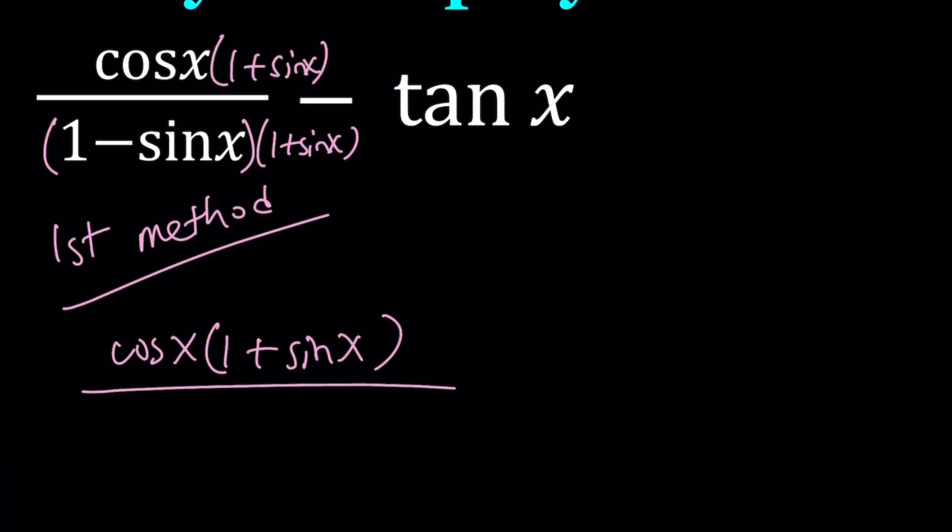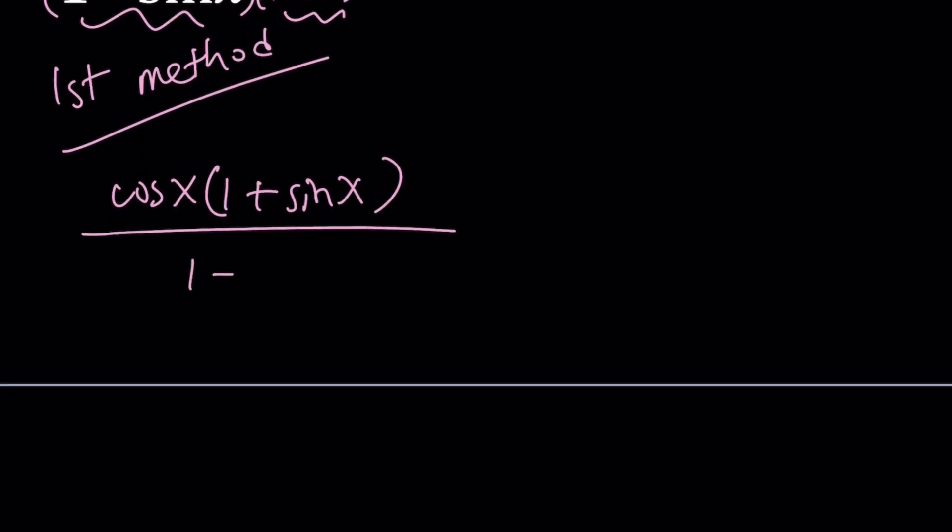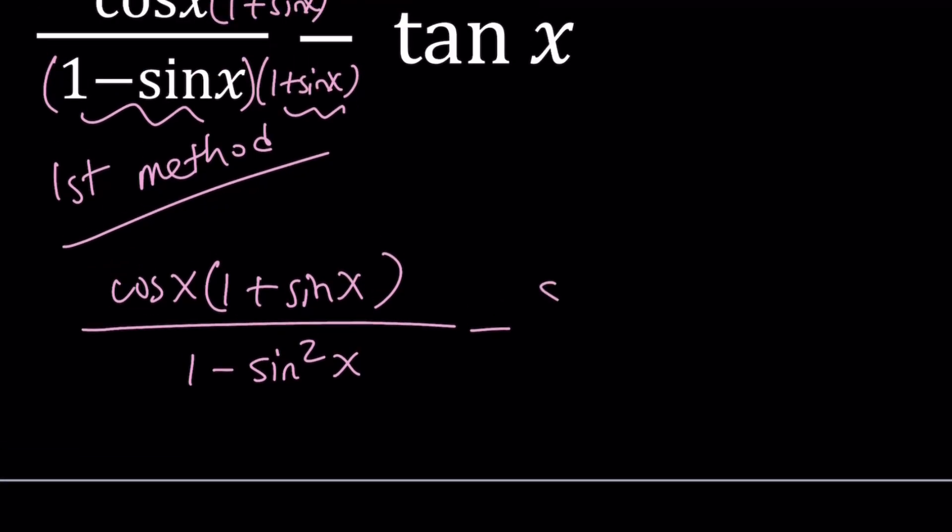I'm not going to distribute that because it's going to simplify later on. But these two, when multiplied, gives us from difference of two squares, 1 minus sine squared x. And the tangent x can be written as sine x over cosine x.